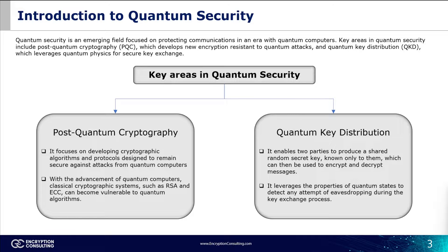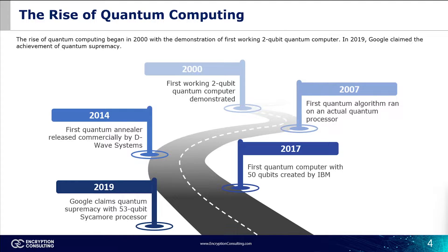We'll move on to the rise of quantum computing and evolution of security measures. Technology and our sources of digital communication have evolved rapidly over the last 20 or so years, as has quantum computing. From years 2000 to 2019, quantum computing steadily advanced, promising unparalleled computational capabilities. The year 2000 marked the first breakthrough with a two-qubit computing demonstration. In 2017, IBM became a pioneer with the introduction of a 50-qubit quantum computer — the first of its kind.